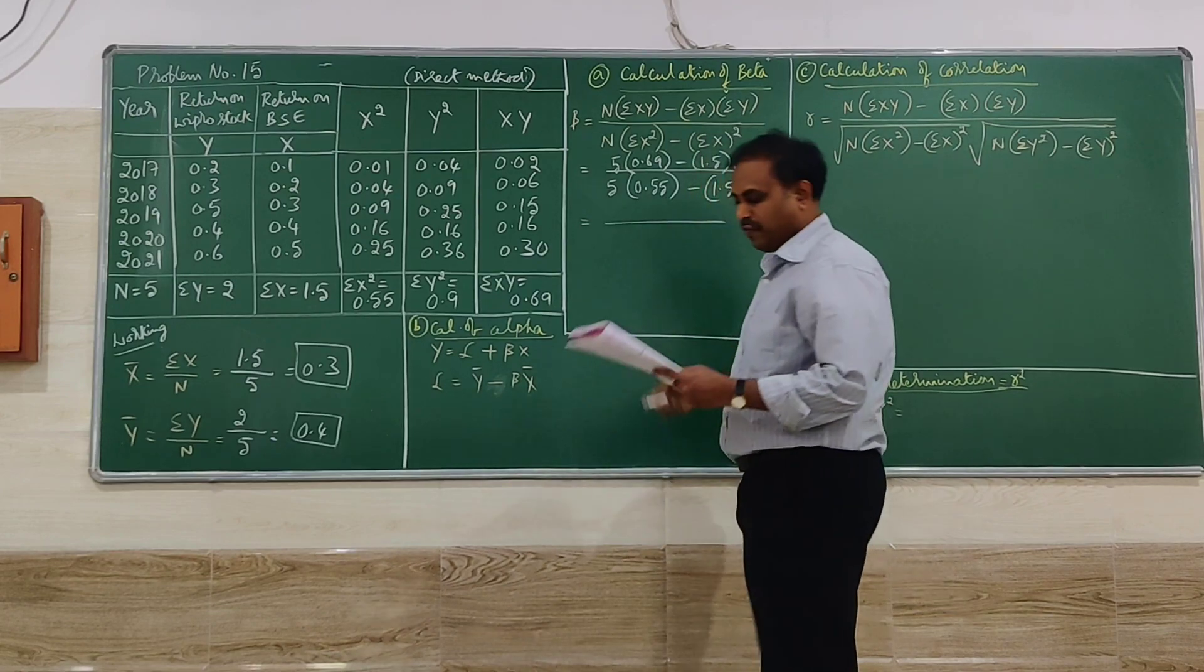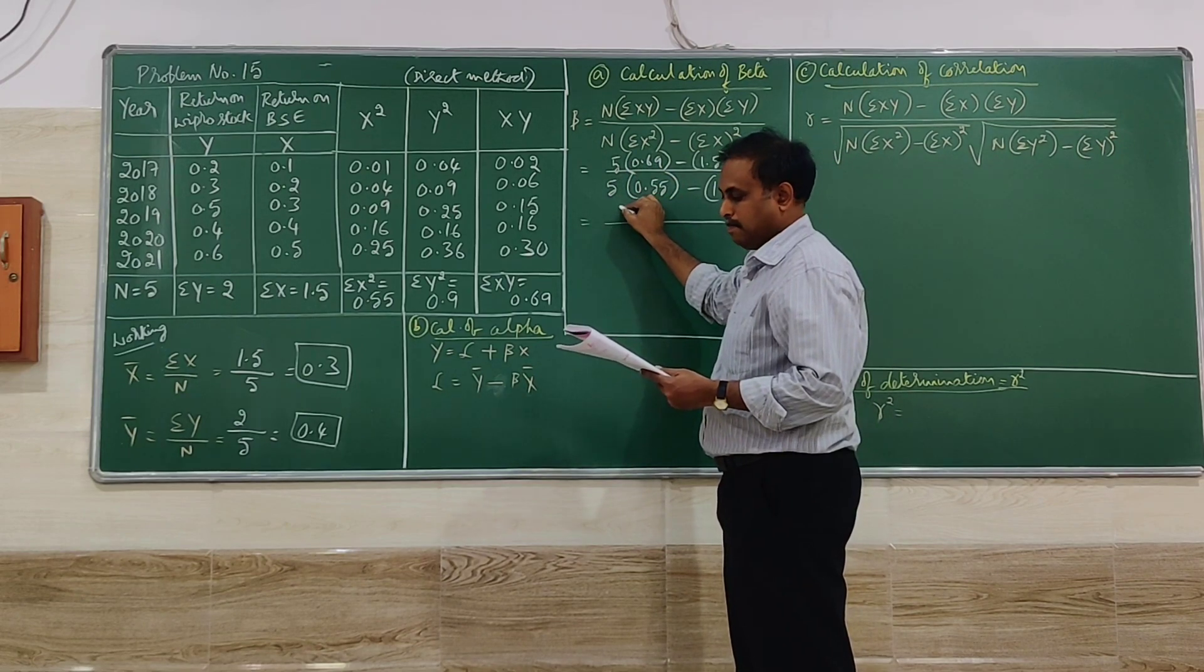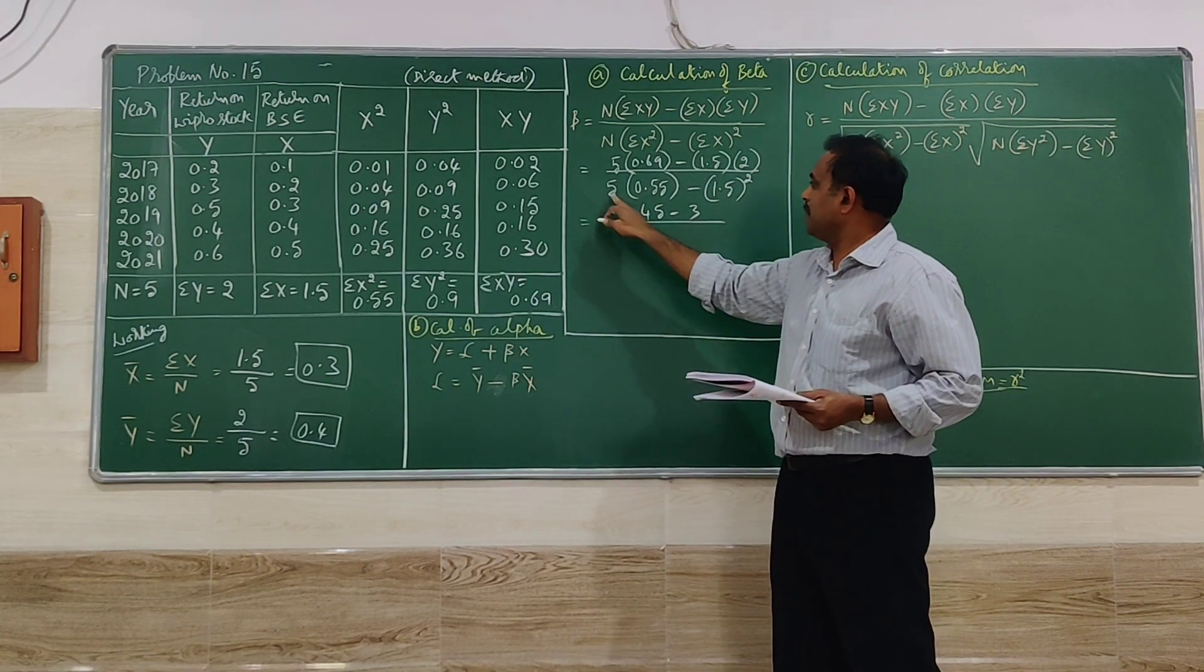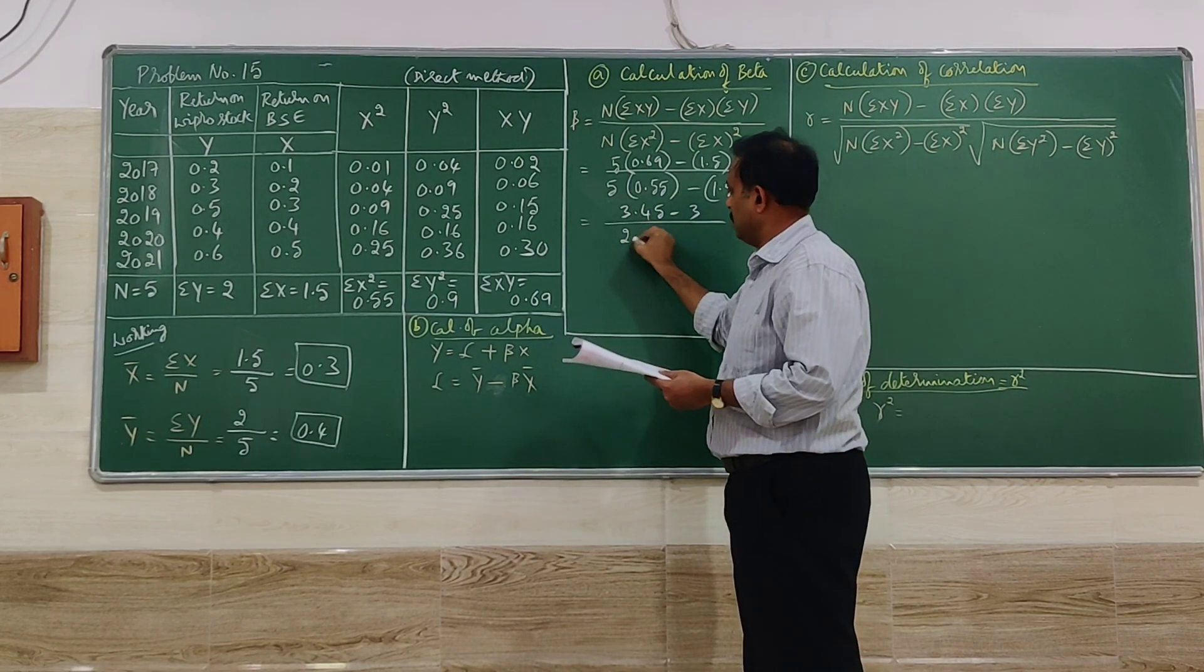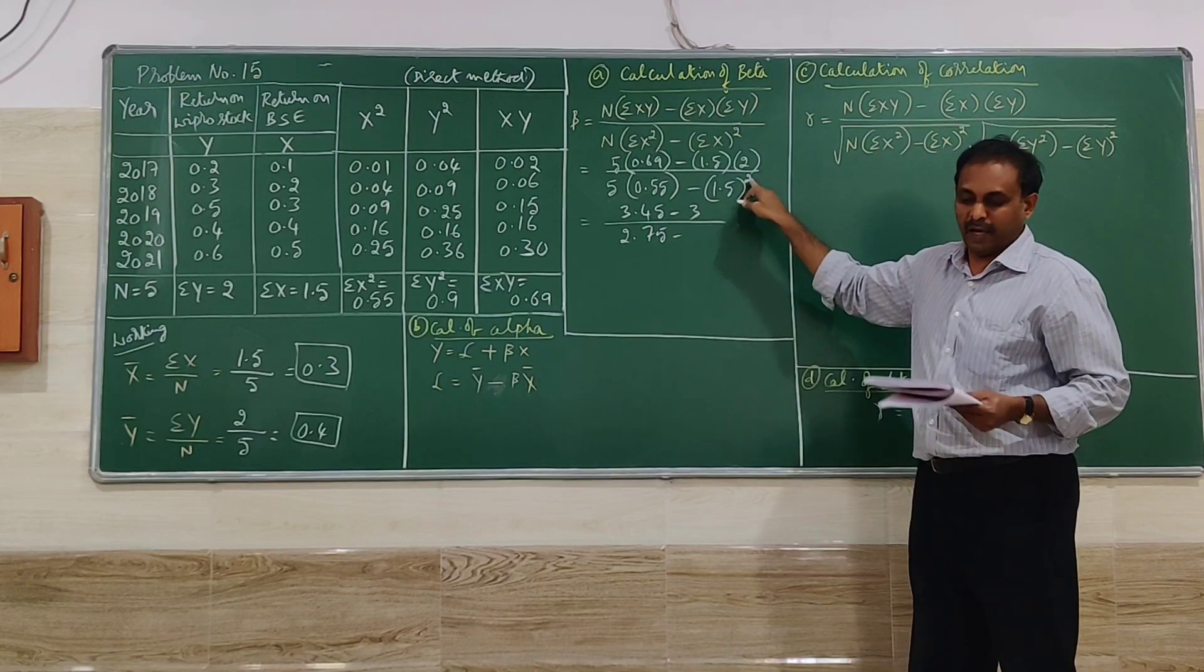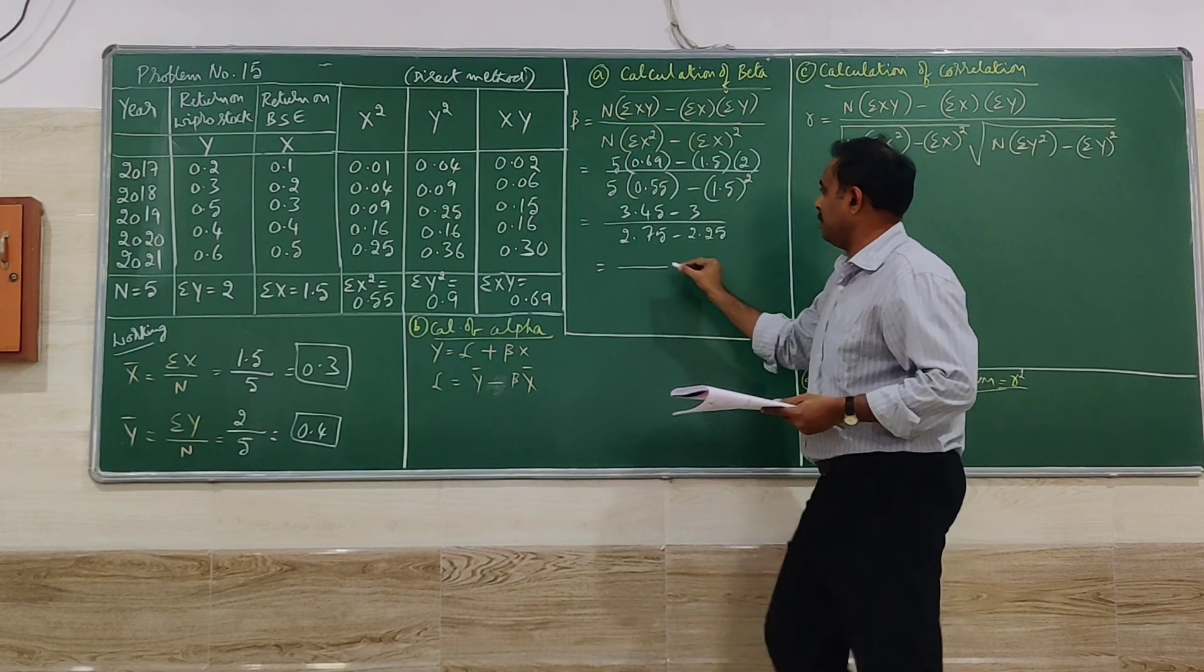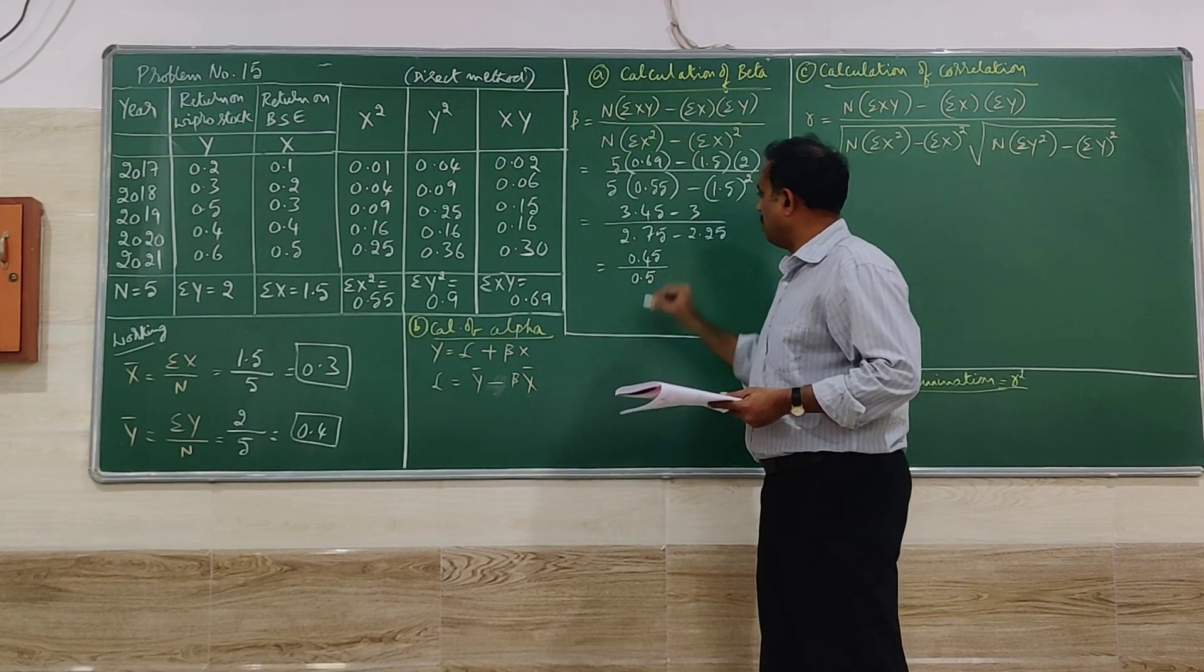So let us go for simplification now. So when you simplify, 5 into 0.69, 3.45 minus 1.5 into 2, that is 3, divided by 5 into 0.55, 2.75 minus 1.5 whole square. Simplify further, you will get 0.45 divided by 0.5.